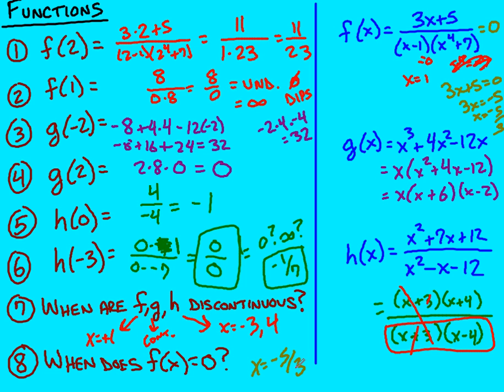So when a function equals zero, you set the top equal to zero. When you're looking for discontinuities, meaning holes and asymptotes, that's when you're going to look at the bottom of the function equaling zero. There you have it.